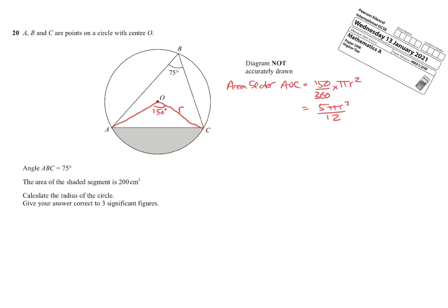Now, I can also write an expression for the area of this triangle AOC. So let's do that. So area of triangle AOC. Now remember, I know the two sides either side of the angle, 150. So I can use my area of a triangle rule, which is a half,